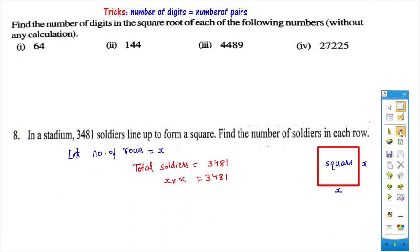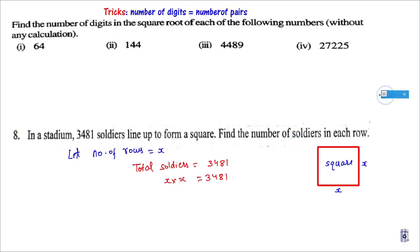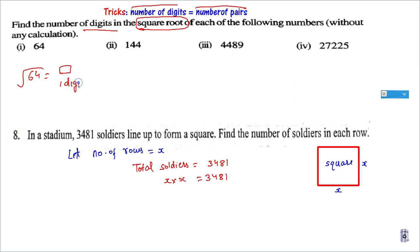Now only 2-3 more questions and our video will be over. There is a question: find the number of digits in the Square Root without calculation. The trick is: make pairs. The number of pairs equals the number of digits in the answer. So if 144 is paired as (1)(44), there are 2 pairs, so the Square Root will be a 2-digit number. If a number has only one pair, the Square Root is a single-digit number.